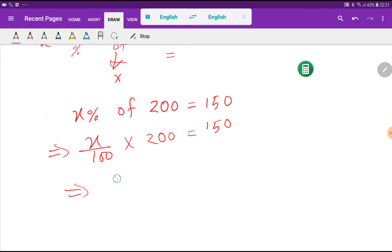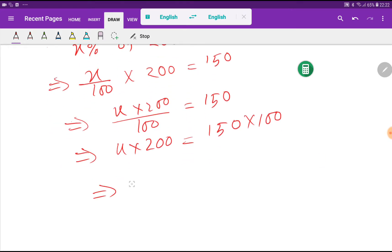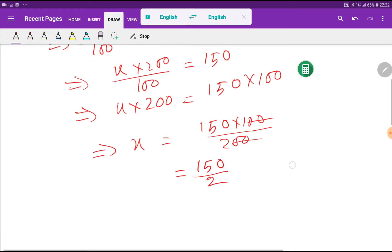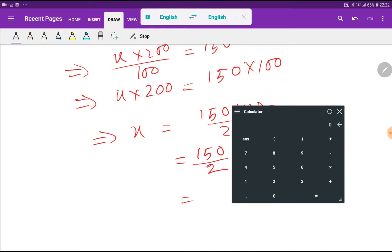Now I can write this like X times 200 divided by 100 equal to 150. Or X times 200 equals 150 times 100. X equal to 150 times 100 divided by 200. So we are getting 150 divided by 2.